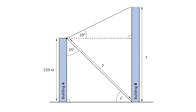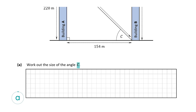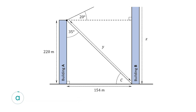Here is our diagram — this is building A and building B, and all the information given at the start of the question is drawn into the diagram. Question A asks us to work out the size of angle C, so let's find angle C in the diagram. Angle C is here and it's in the following triangle.